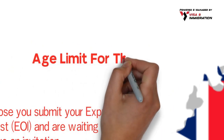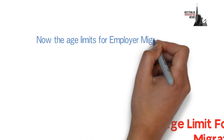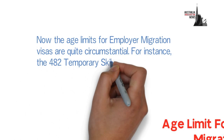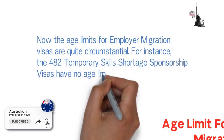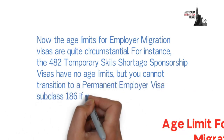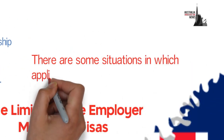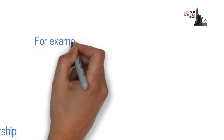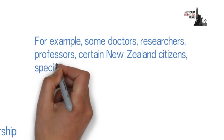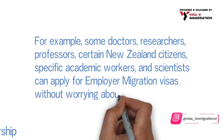Moving on, let's look at the age limit for employer migration visas. The age limits for employer migration visas are quite circumstantial. For instance, the 482 Temporary Skills Shortage sponsorship visas have no age limits, but you cannot transition to a permanent employer visa Subclass 186 if you are 45 years old or more. There are some situations where applicants are offered age exceptions — for example, some doctors, researchers, professors, certain new foreign citizens, and specific academic workers and scientists can apply for employer migration visas without worrying about age limits.